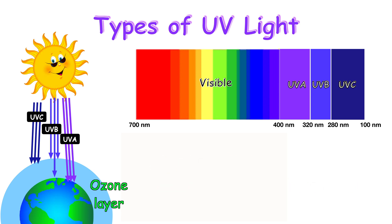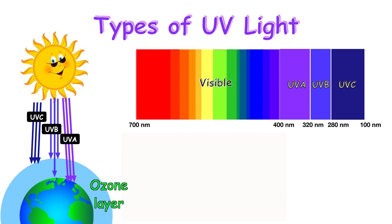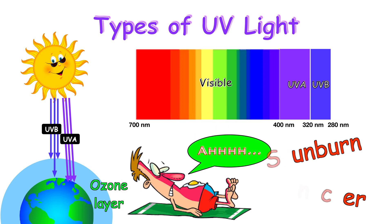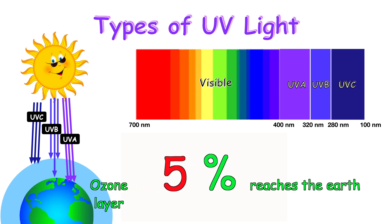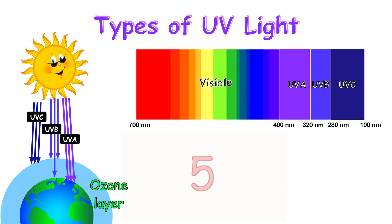UVA can penetrate windows and clouds. UVB has the medium wavelength, between 280 and 320 nanometers. UVB is responsible for producing sunburn and most skin cancers, such as melanoma. A large amount of UVB is absorbed by the ozone layer, and only 5% reaches our planet's surface. UVB doesn't penetrate windows and is more likely to be filtered by clouds.